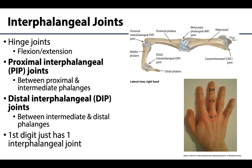Now on to the many interphalangeal joints. The good thing is that these are all hinge joints, so there are no differences here — easier to remember. They do what any typical hinge joint does: flex and extend. There are two main types: the proximal interphalangeal or PIP joints, and the distal interphalangeal or DIP joints, which are between the intermediate or middle phalanx and the distal phalanx.